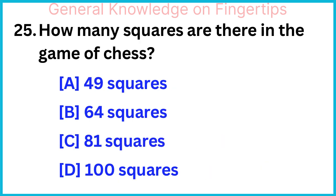How many squares are there in the game of chess? 64 squares.